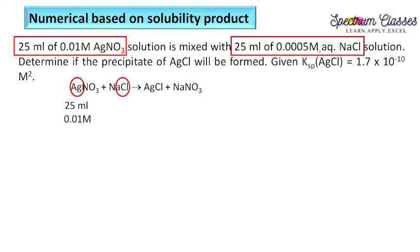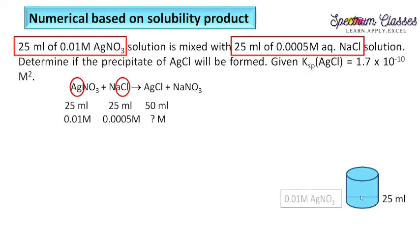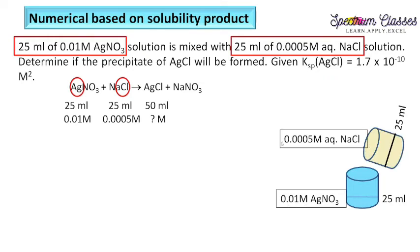We have 25 mL of 0.01 molar AgNO₃ and 25 mL of 0.0005 molar NaCl. When mixed, the overall solution becomes 50 mL. Visualize: a container with 25 mL of 0.01 M silver nitrate — on adding 25 mL of NaCl solution, the total volume becomes 50 mL, giving a mixture of AgNO₃ and NaCl.